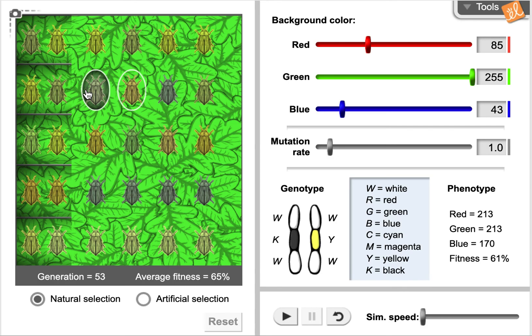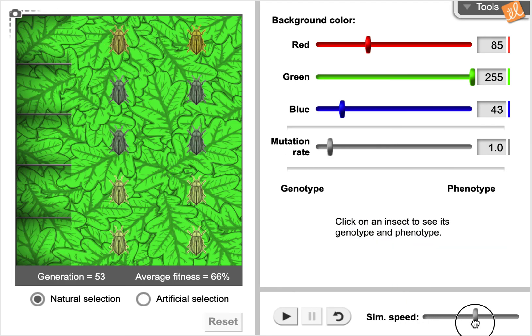We also want to check out mutations and see what the mutations that have popped up in this generation are. Finally, we want to up the simulation speed and really let it run and tell us what happens over time. Final question in the first section is explaining how evolution occurs through natural selection. Then we are going to go on to a second simulation.